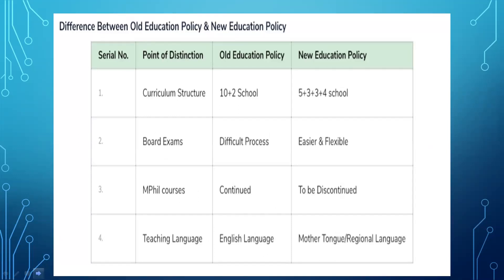Comparing old and new education policy: regarding curricular structure, the old policy had a 10+2 school structure, but the new policy changes it to 5+3+3+4. For board exams, the process was difficult, but it will be made easier and more flexible under the new policy. The M.Phil course will be discontinued. The teaching language was English, but it will now be the mother tongue or regional language.